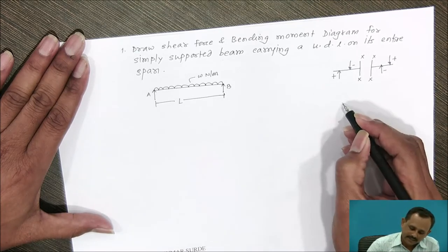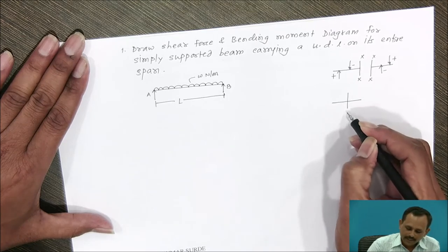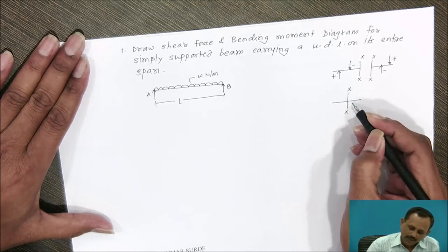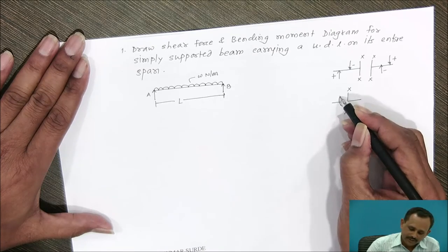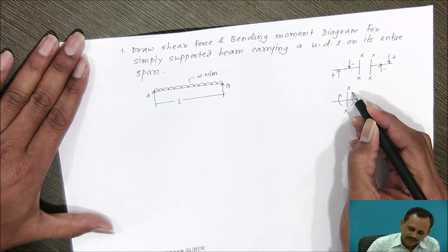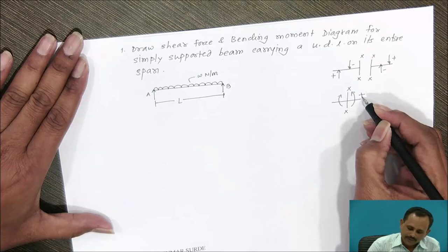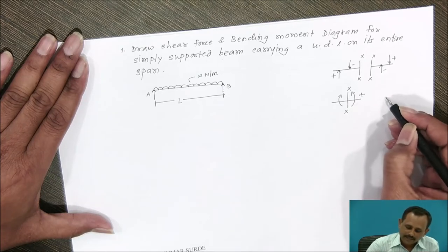Whereas, in case of bending moment, the bending moment at section XX — if the moment acting to the left side of the section is in the clockwise direction and to the right side of the section in the anticlockwise direction — is considered to be positive, and it is called a sagging moment.